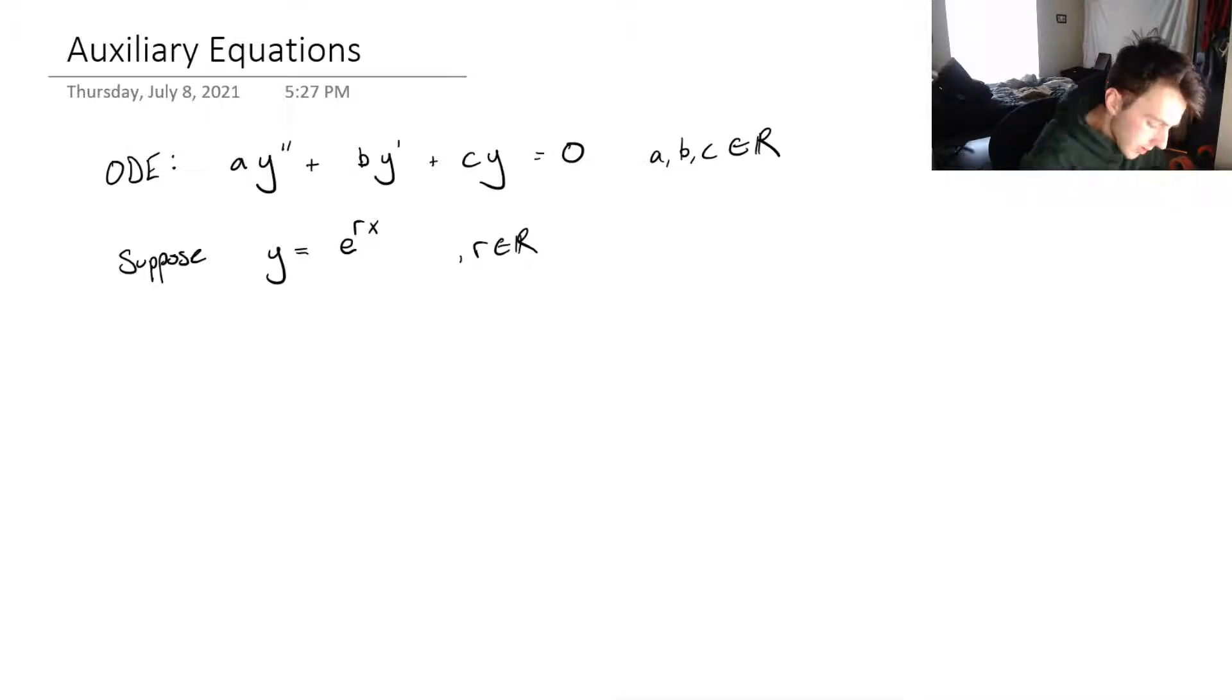So if that is our solution y, then let's take a look at the ODE that we have here. So we know y. That means we know y prime and y double prime. So y prime would be equal to, and this is just a chain rule here, r times e to the rx. I can do the same thing for the second derivative. That'll be r squared times e to the rx.